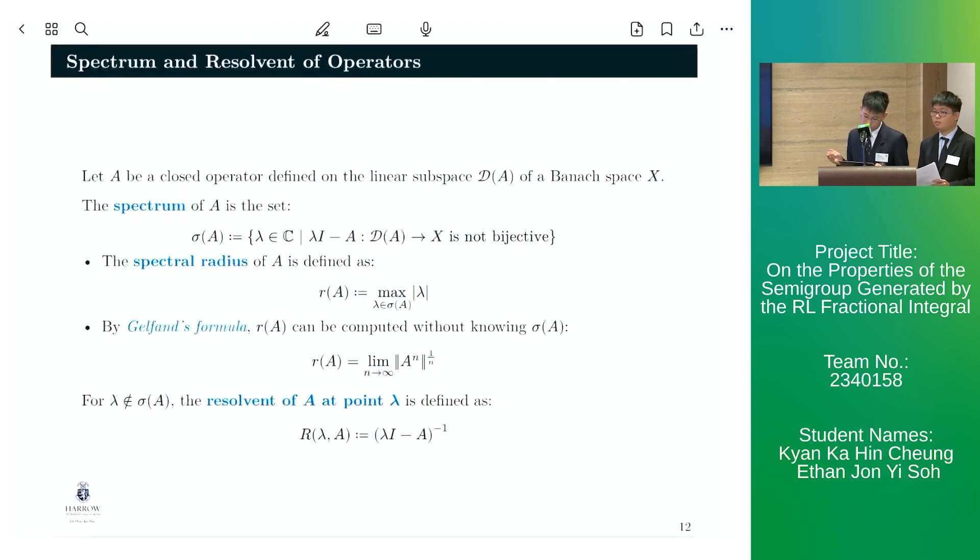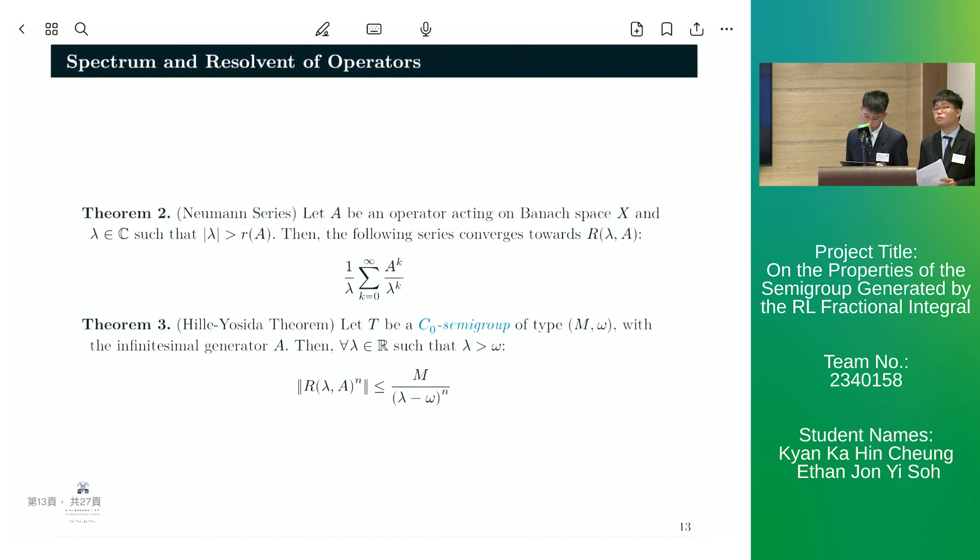This can be calculated using Gelfand's formula as follows. And furthermore, for all lambda which is not in the spectrum of a, we have that the resolvent of a at point lambda is defined as the inverse of lambda i minus a. We also note the two following theorems, namely the Neumann series and the Hille-Yosida theorem.